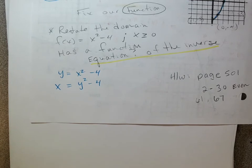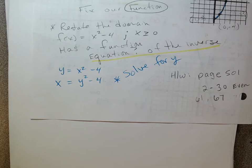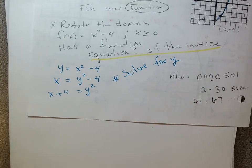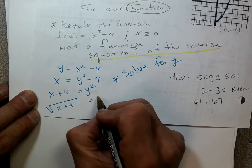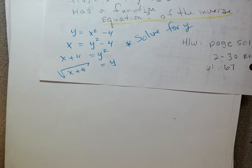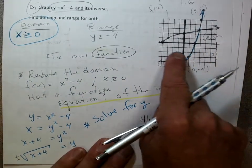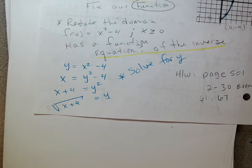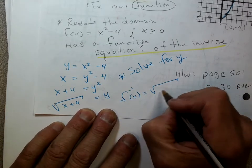Solve for y: add 4 to both sides — x plus 4 equals y squared — then take the square root: the square root of (x plus 4) equals y. Now, you might ask about plus or minus, but we got rid of the negative part of this graph — we only kept the positive half — so we don't say plus or minus. The inverse equation is f inverse of x equals the square root of (x plus 4).